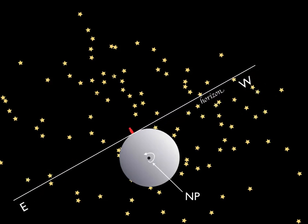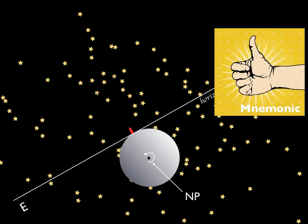A good mnemonic, that will make it easier for you to remember, is to curl the fingers of your right hand and stick your thumb up. The direction that the fingers are curling is the direction of the Earth's rotation. Your thumb points along the direction of the North Pole.